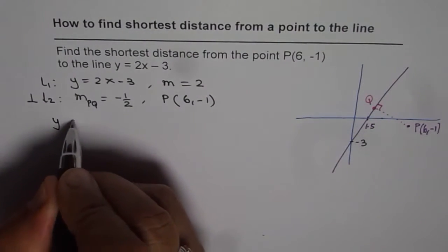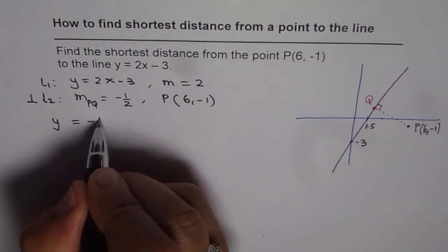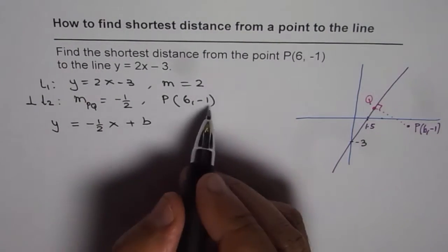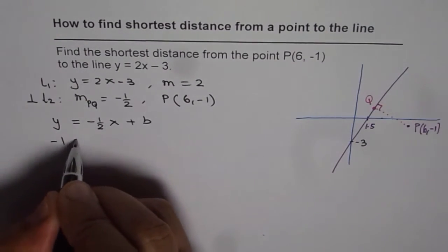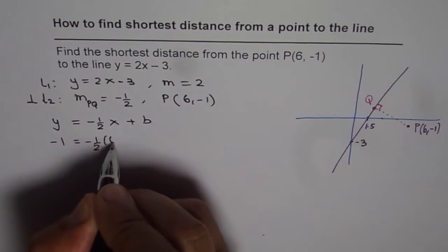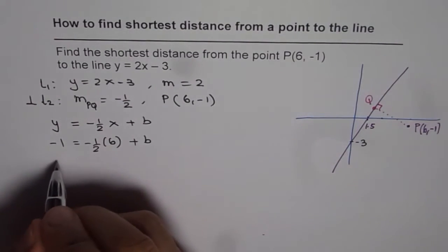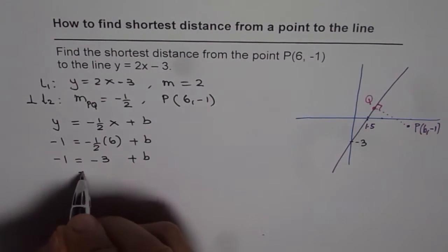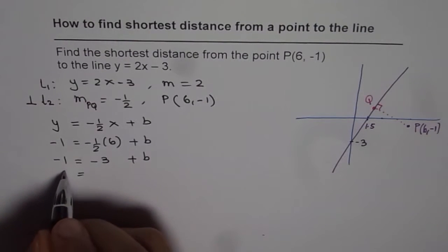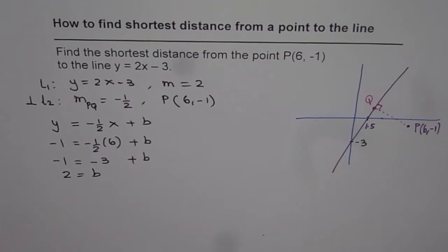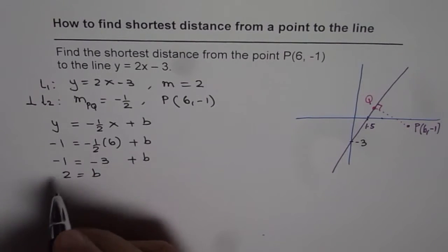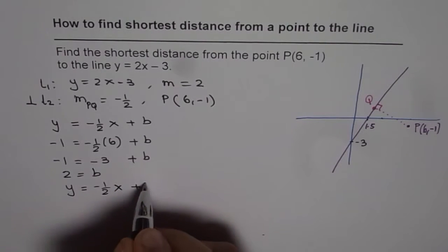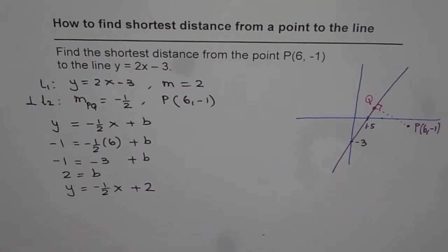So the equation of the perpendicular line is y = –½x + b. To find the value of b, we substitute x = 6 and y = –1. We get –1 = –½ × 6 + b, which gives –1 = –3 + b, so b = 2. Therefore the equation of line PQ is y = –½x + 2.